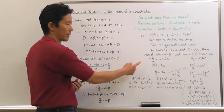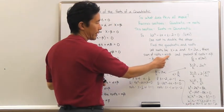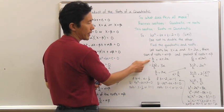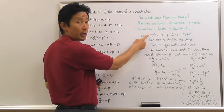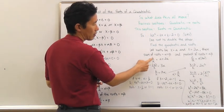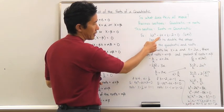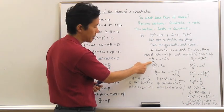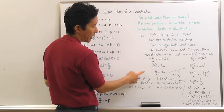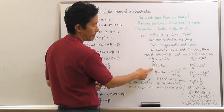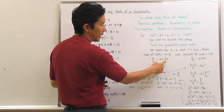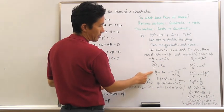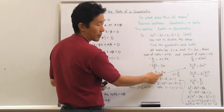Then what I can do is use the fact that the sum of the roots, alpha plus beta, is equal to −b/a. Looking at my original quadratic equation, the coefficient of the linear term is −6, and a, the coefficient of the quadratic term, is k. So the opposite of −6 divided by k should equal the sum of the roots, which is alpha + 2alpha = 3alpha. Simplifying, 6/k = 3alpha.